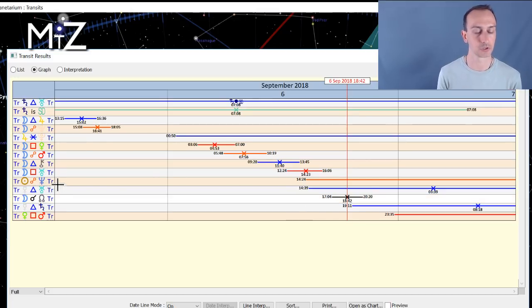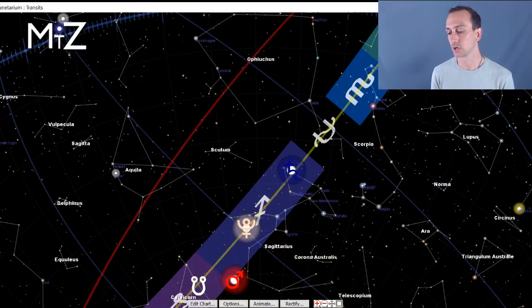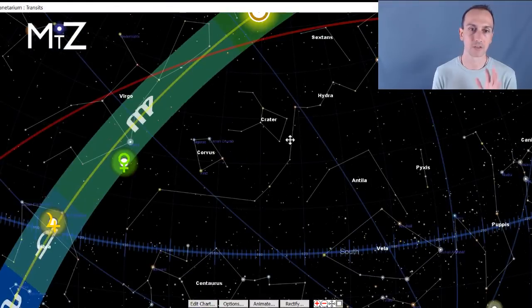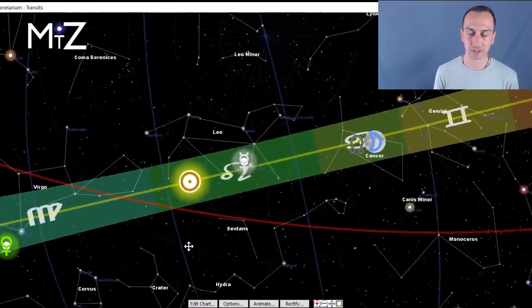A lot of these lunar aspects you see here is basically this grand cross that we've got forming with the moon. Essentially, the moon's going to go over the north node and square up to Venus, Mars and Uranus, oppose up to Mars and square Uranus. So this is a lot of different energy.